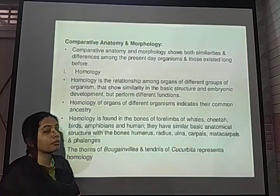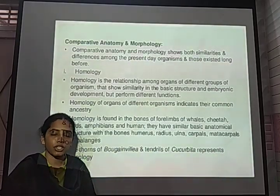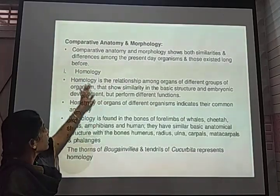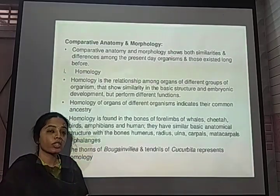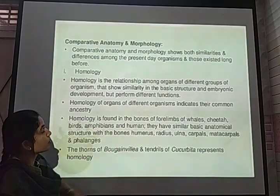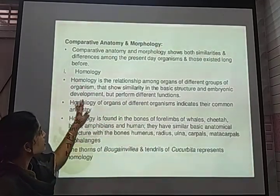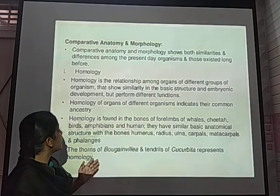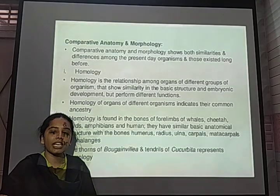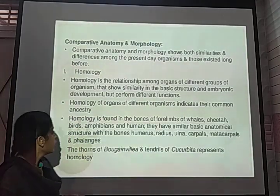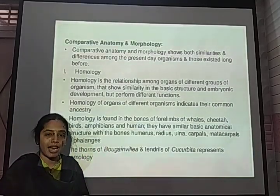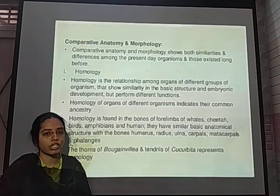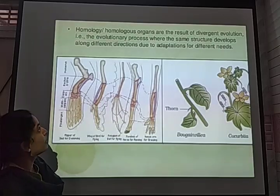Another evidence is comparative anatomy and morphology. Anatomy is the study of internal structure, and morphology is the study of external features. There are two types: homology and analogy, which relate to divergent evolution and convergent evolution respectively. Homology shows a relationship among organisms of different groups that share similarities in basic structure and embryonic development but differ in function. Homologous organs have a similar origin but perform different functions — for example, the forelimbs of humans and bats have the same origin but serve different purposes: flight in bats and manipulation in humans.